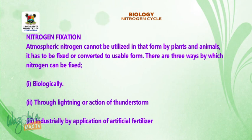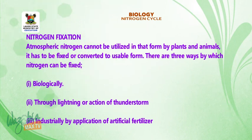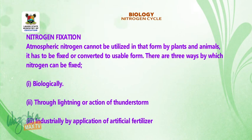The three ways are: 1. Biologically. 2. Through lightning or action of thunderstorms. 3. Industrially, by application of artificial fertilizer.